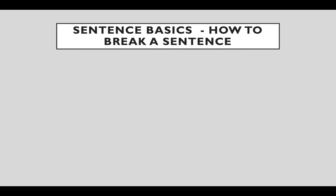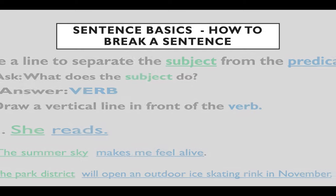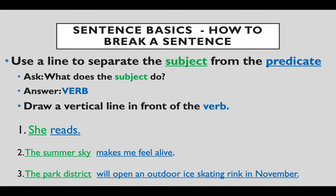How to break a sentence? Use a line to separate the subject from the predicate. Ask what does the subject do? The answer is the verb. So draw a vertical line in front of the verb. For example, she — what does she do? She reads. So before reads, we draw a vertical line.